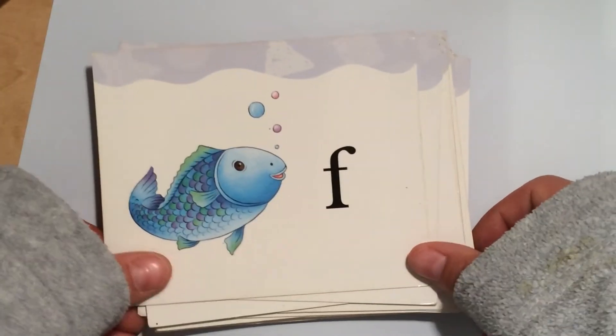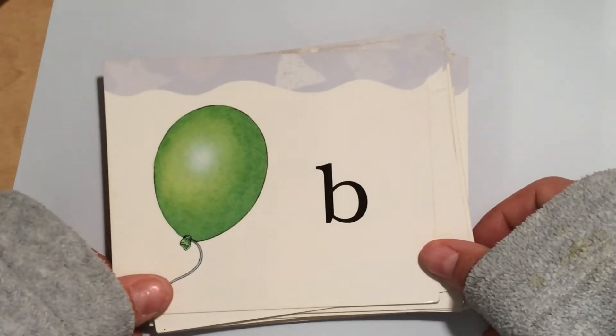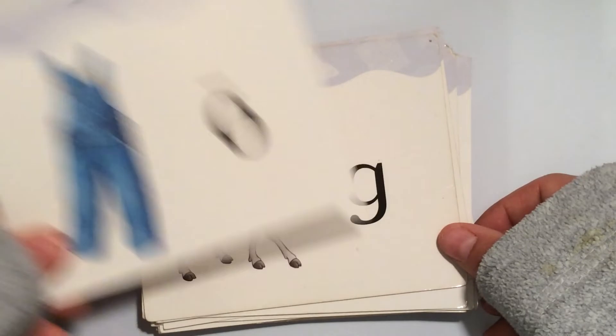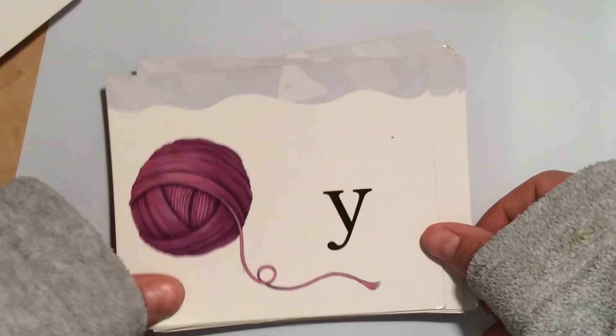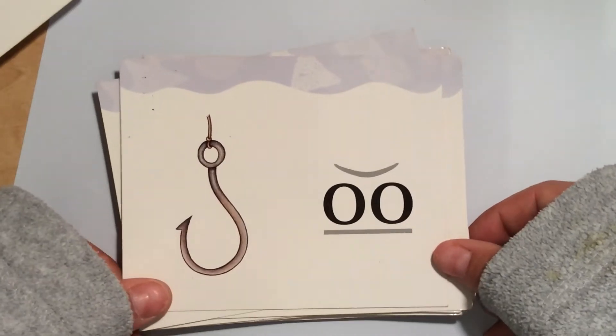Thimble TH, Fish TH, Balloon B, Overalls O, Goat G, Cat K, Yarn Y, Hook U.